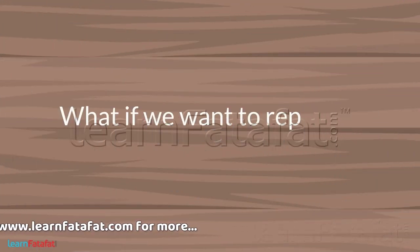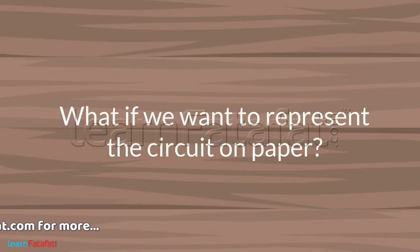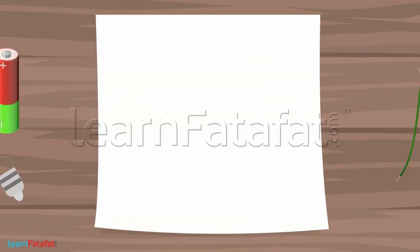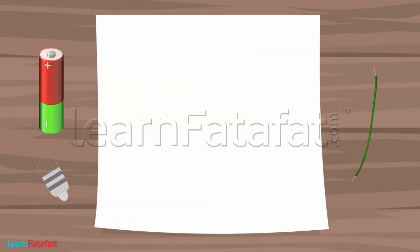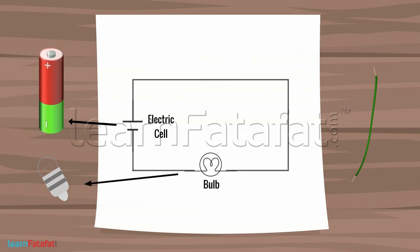What if we want to represent the circuit on paper? We cannot do it with actual elements. So we draw their symbols on paper. This is the symbol for an electric cell. This is the symbol for a bulb. And they are connected by lines, which represent wires.